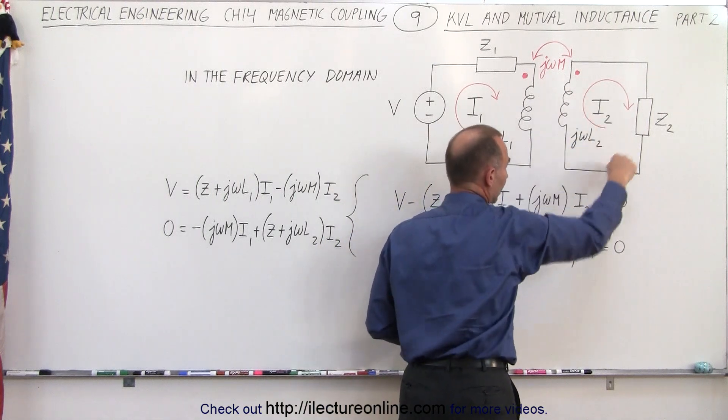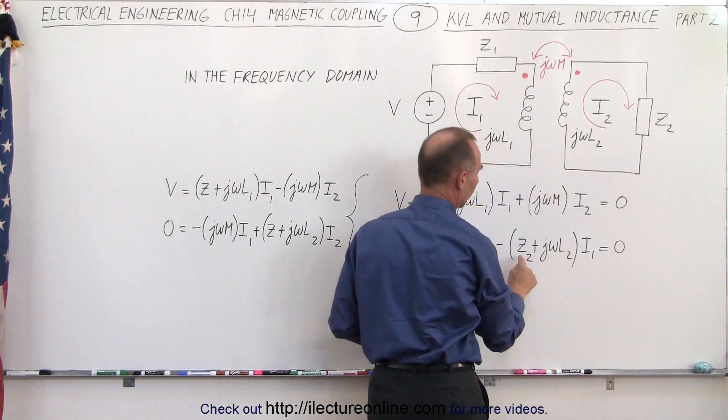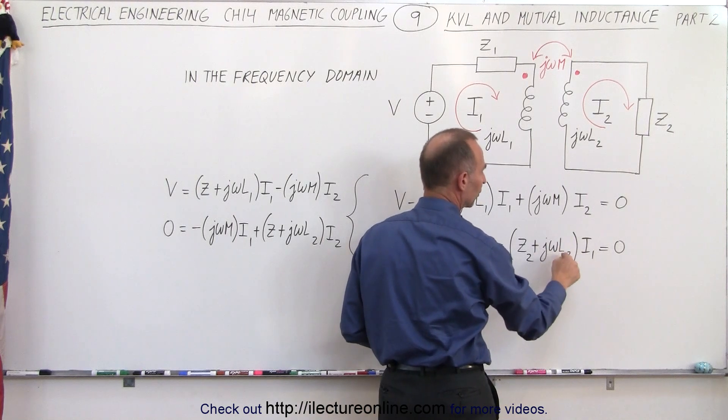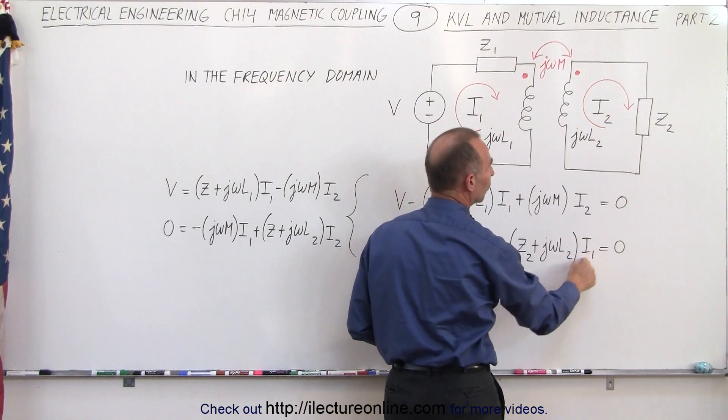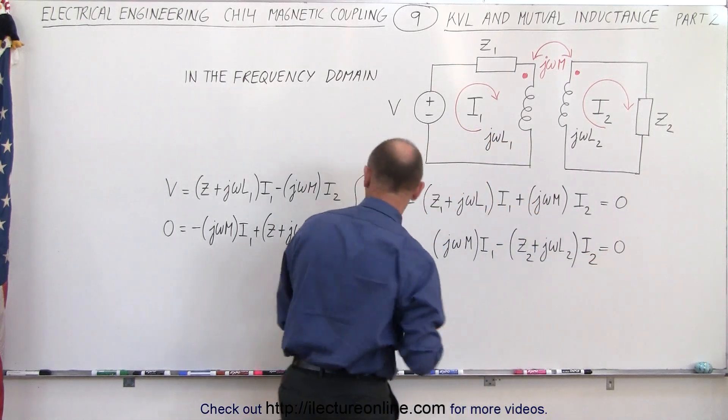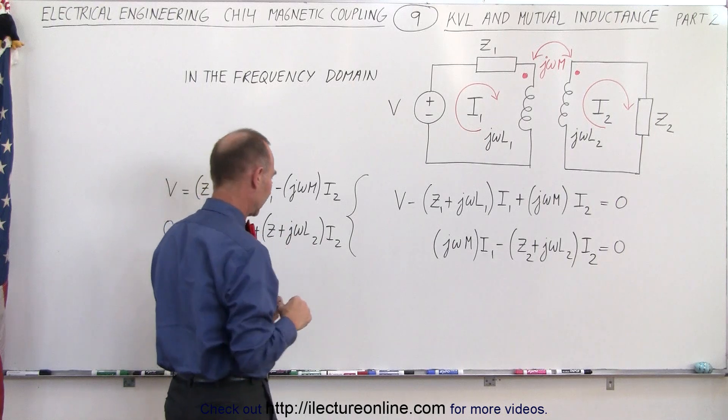So minus Z plus jωL2, that's the self-inductance of the second coil, times the current. That would be times I2. I had that wrong. Times I2. Did I have that wrong as well? No, I got it correctly over here.